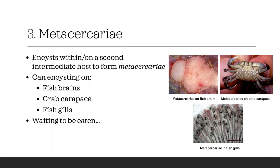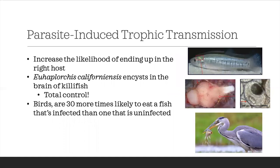In life, that is essentially what the goal of every organism is — to reproduce and to form offspring. In fact, speaking of waiting to be eaten, these parasites can do many things to increase the likelihood of ending up in the right host, such as the bird. This is called parasite-induced trophic transmission. This basically means that the parasite is doing something — changing something in the intermediate host — to make it more likely for the parasite to be transmitted to the definitive host by making the intermediate host easier to be preyed on by the definitive host.